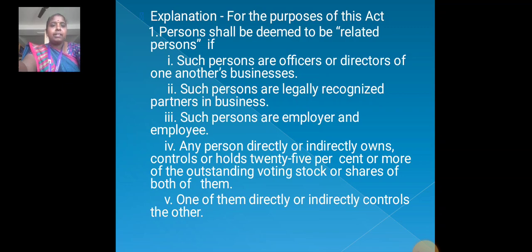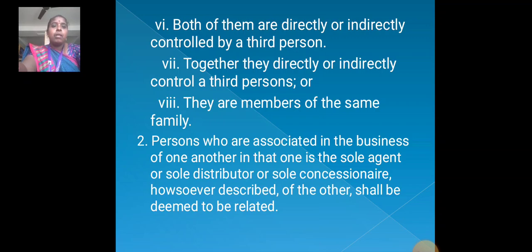Any person who directly or indirectly owns, controls or holds 25% or more of the outstanding voting stock or shares of both of them. One of them is directly or indirectly controlled by the other. Both of them are directly or indirectly controlled by a third person. Together, they are directly or indirectly controlled by a third person. They are members of the same family. Persons who are associated in the business of one another, in that one is the sole agent or sole distributor or sole consignee of the other, shall be deemed to be related. Thank you for watching.